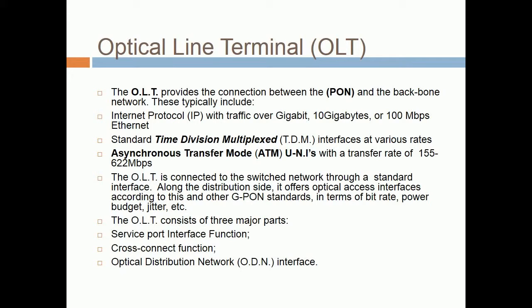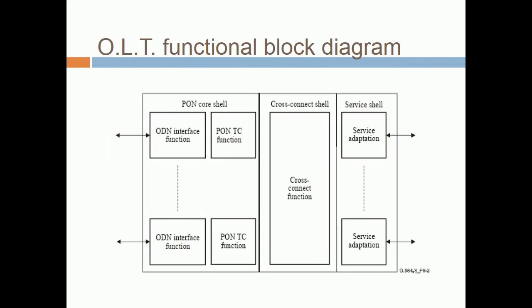The OLT is connected to the switched network through a standard interface. Along the distribution side, it offers optical access interfaces according to G-PAN standards, in terms of bitrate, power budget, jitter, etc. The OLT consists of three major parts: Service Port Interface Function, Cross Connect Function, and Optical Distribution Network. This is an example of the structural architecture of an OLT.